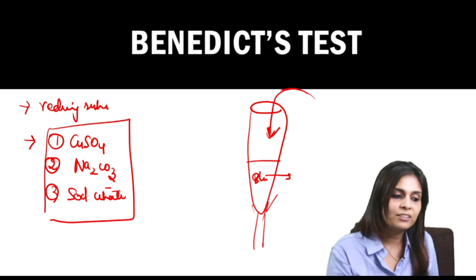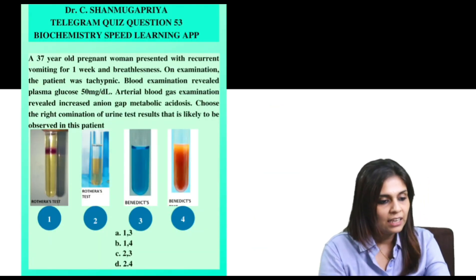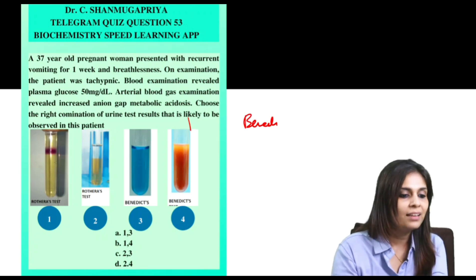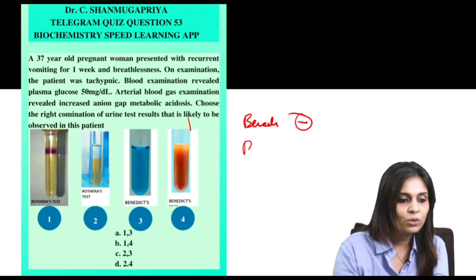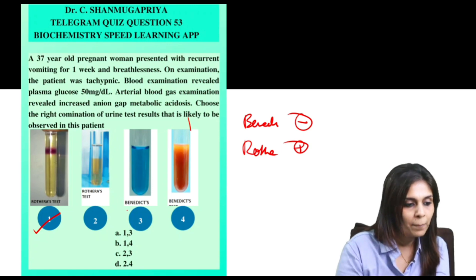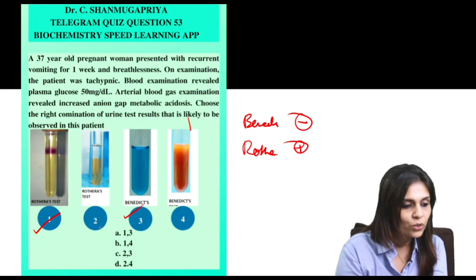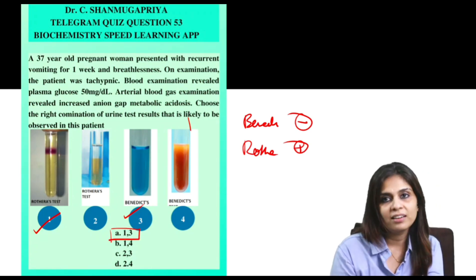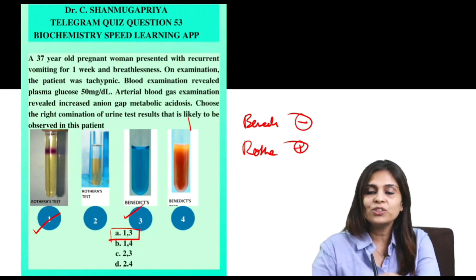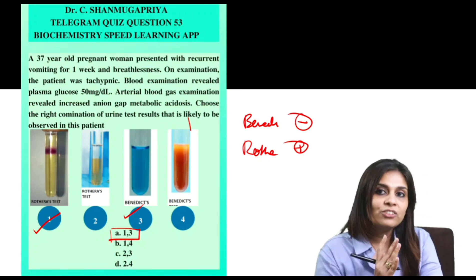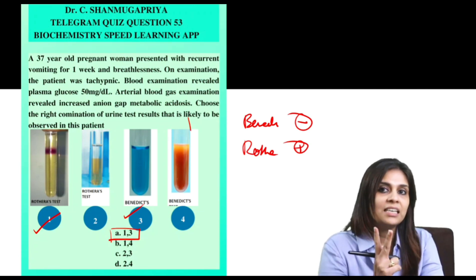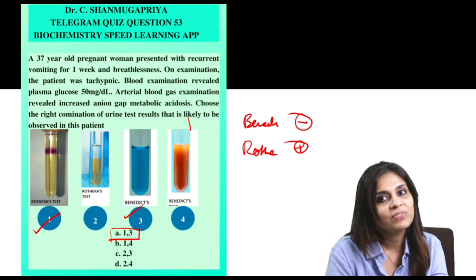Now that you know it's a case of starvation ketosis, Benedict's test is going to be negative and Rothera's test is going to be positive. Rothera's test positive is picture number one; Benedict's test negative is picture number three. So the answer happens to be choice A. By discussing this question, you have understood the biochemical basis of starvation ketosis, the causes of increased anion gap metabolic acidosis, and two biochemical urine tests — Rothera's test and Benedict's test. Thank you.